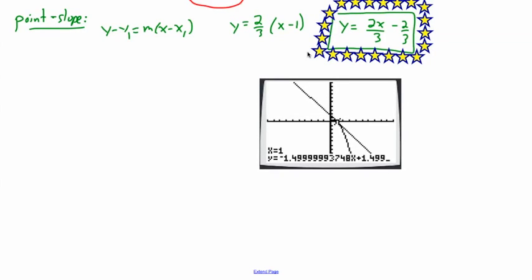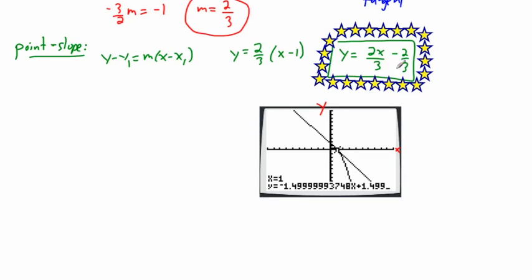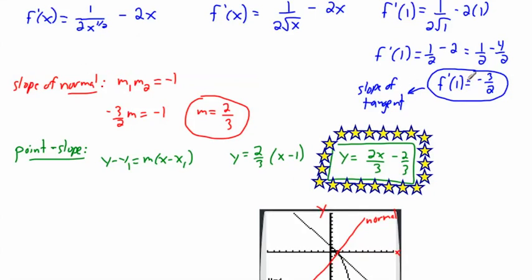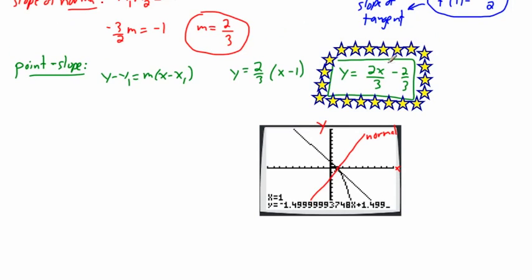Looking at the screenshot, the curve is shown along with the tangent line. The slope of the tangent reads −1.5, confirming our value of −3/2. The normal should be perpendicular to this tangent at x = 1.